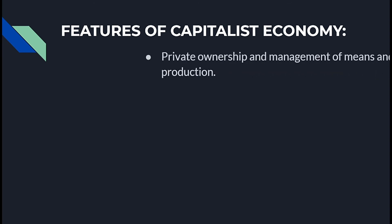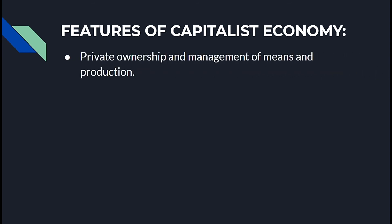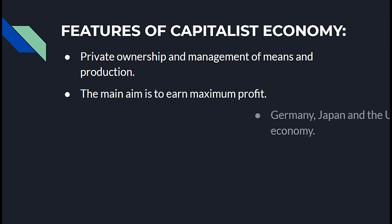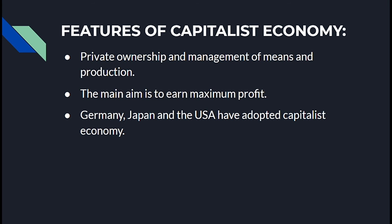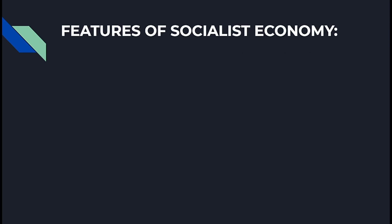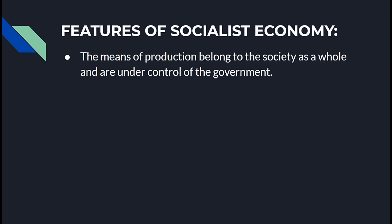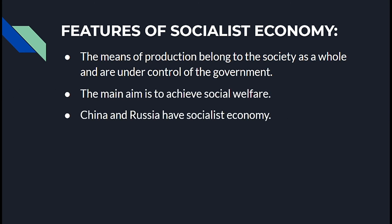Features of a capitalist economy: private ownership and management of means of production; the main aim is to earn maximum profit. Germany, Japan, and the USA have a capitalist economy. Features of a socialist economy: the means of production belong to the society as a whole and are under the control of the government; the main aim is to achieve social welfare.